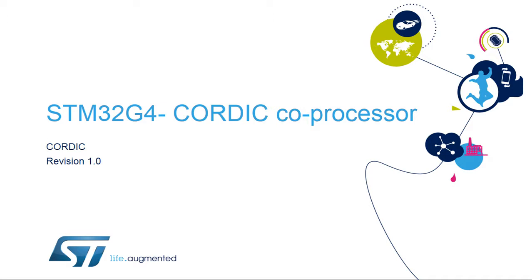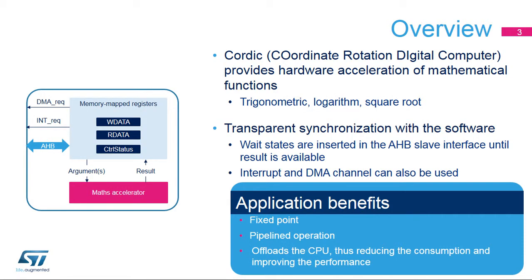Hello and welcome to this presentation of the STM32G4 Cordic Co-Processor block. It will cover the main features of this block, which is used to accelerate trigonometric functions. The Cordic Co-Processor provides hardware acceleration of certain mathematical functions, notably trigonometric functions commonly used in motor control, metering, signal processing, and many other applications. It speeds up the calculation of these functions compared to a software implementation, allowing a lower operating frequency or freeing up processor cycles to perform other tasks.